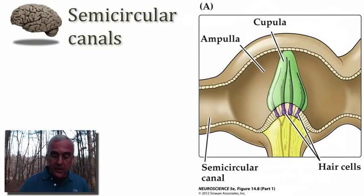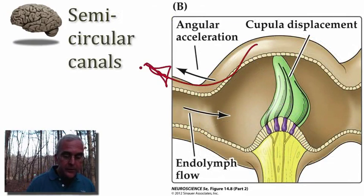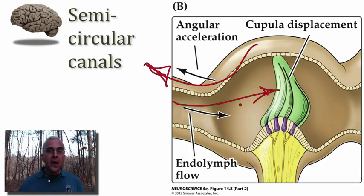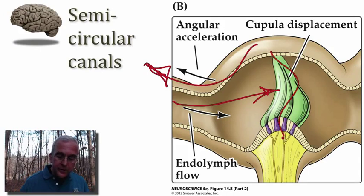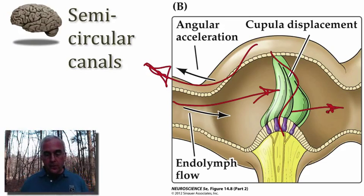Here's the semicircular canal at rest. When we rotate — accelerating our sensory epithelium with a turning of the head — the inertial lag causes endolymph to essentially flow in the opposite direction. Really, it's the fixed structures that are moving while the endolymph stays more or less in place. That causes displacement of the cupula, which deflects the hair cells in the crista toward the longest stereocilium, leading to depolarization of all hair cells together in that one crista.